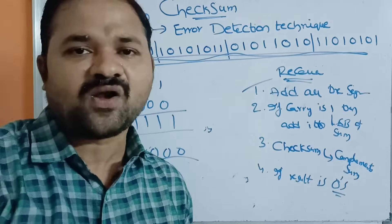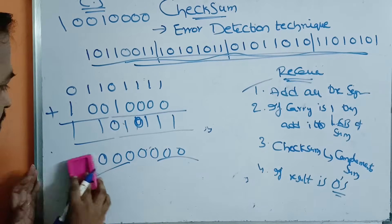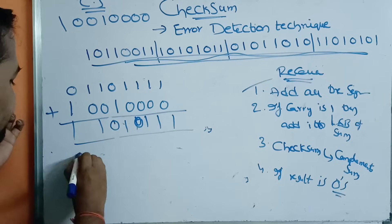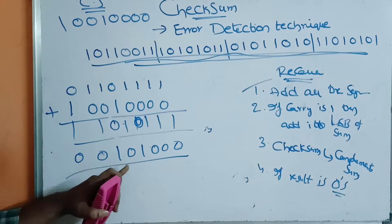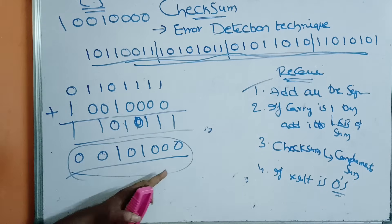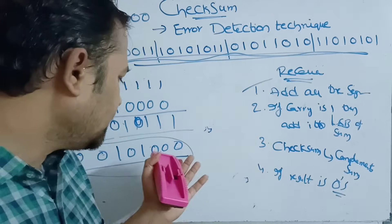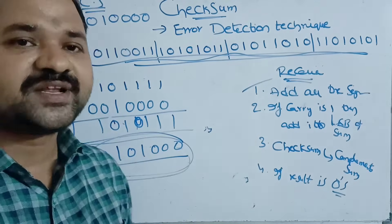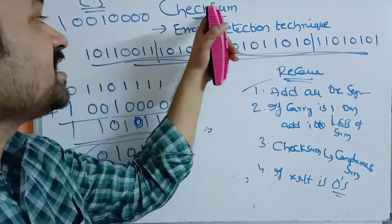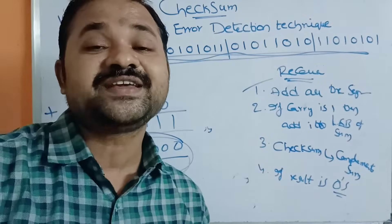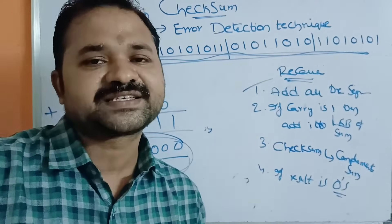Suppose some of the bits are lost or changed. Then the result may contain some 1s. After complementing, those 1s appear in the result, meaning the receiver detects an error and sends a message to the sender to retransmit. With checksum we can only do error detection, not error correction. For error correction, the Hamming technique is used, which we will discuss in the next video.